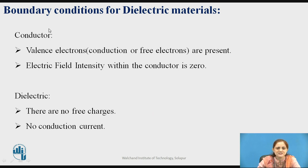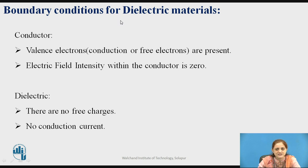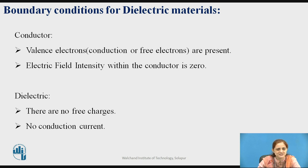First, define what is a conductor and what is a dielectric. In a conductor, valence electrons — also called free electrons — are present and are used for the conduction of current, and the electric field intensity within the conductor is zero. This is the property of the conductor. In dielectric materials, there are no free charges. Therefore, since there are no free charges, the conduction current is equal to zero — no conduction current is considered.